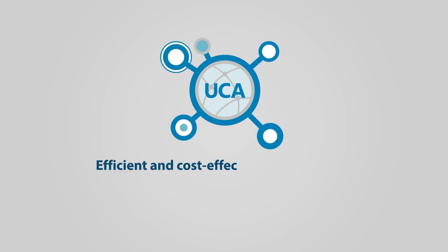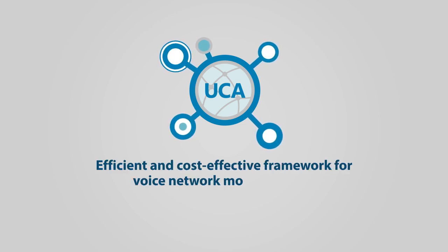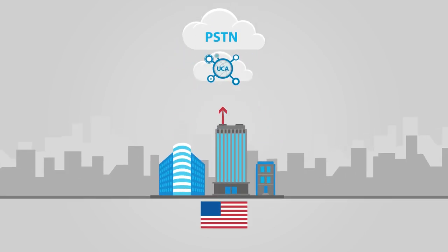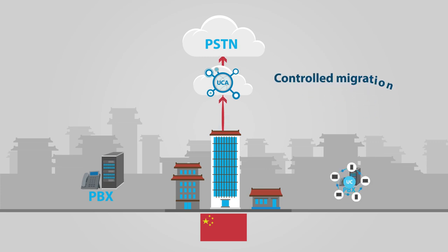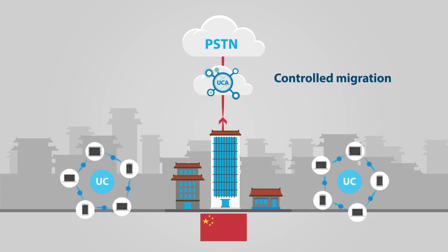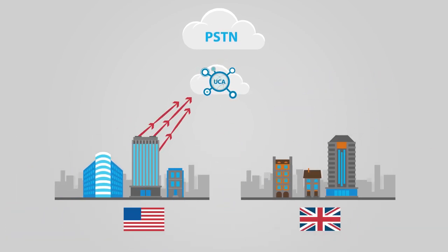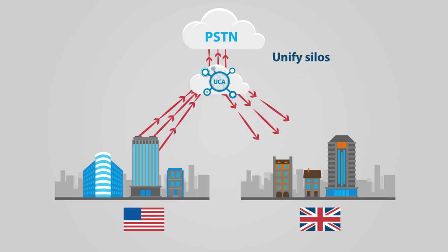Meet AudioCodes Universal Communications Architecture, an efficient and cost-effective framework for voice network modernization. UCA creates a unified enterprise voice network without the need for a forklift upgrade. Migration to a global unified communications solution can be carried out gradually and at a controlled pace. UCA helps organizations save ongoing communications costs by unifying their multi-vendor communication silos.